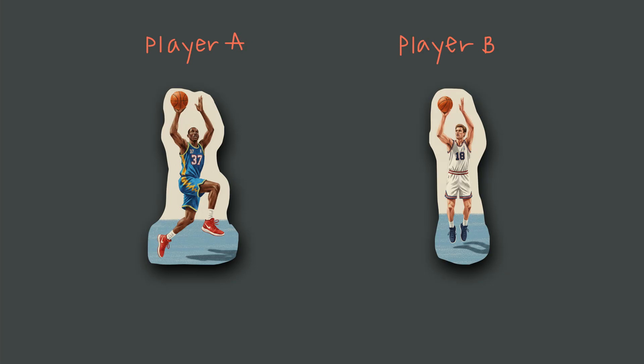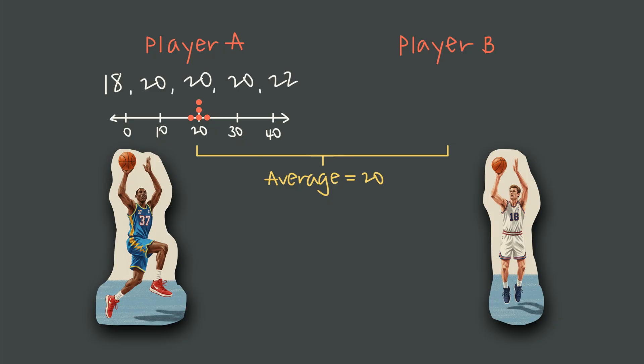Through five games, two basketball players both average 20 points per game. But player A's scores are 18, 20, 20, 20, and 22, while player B's are 0, 10, 20, 30, and 40.